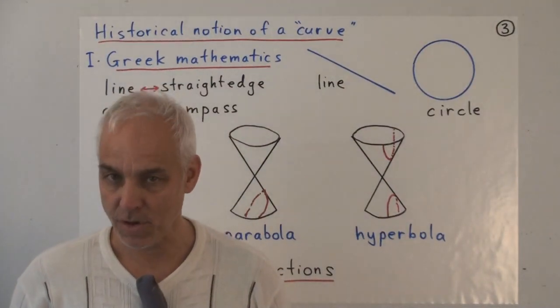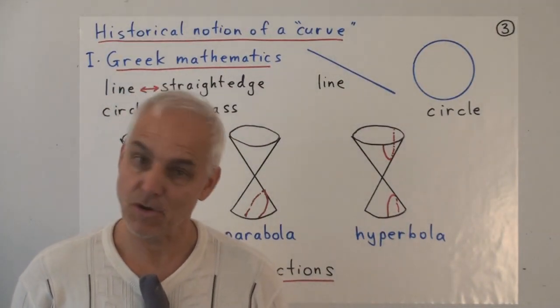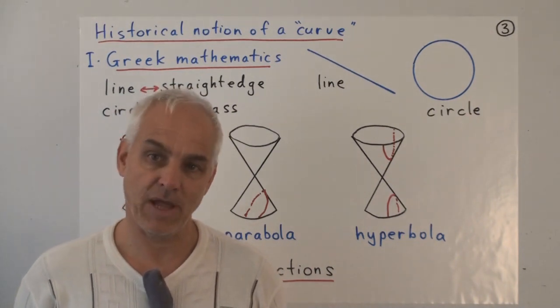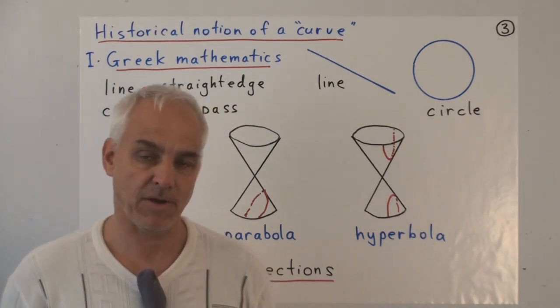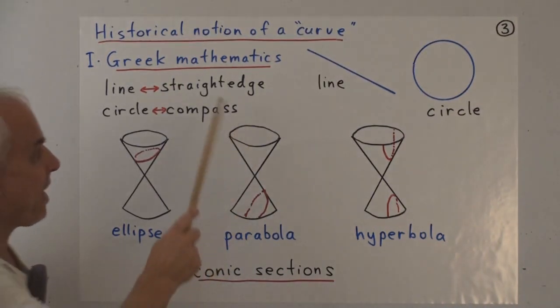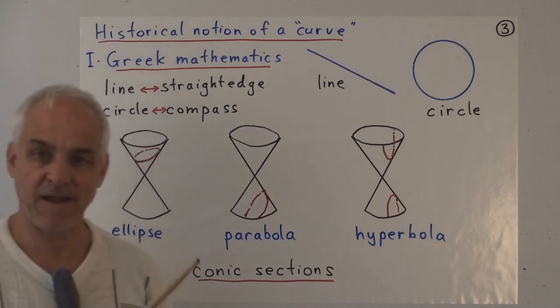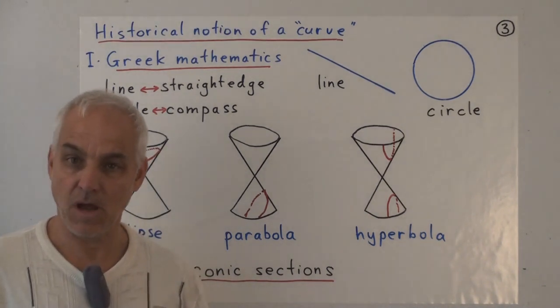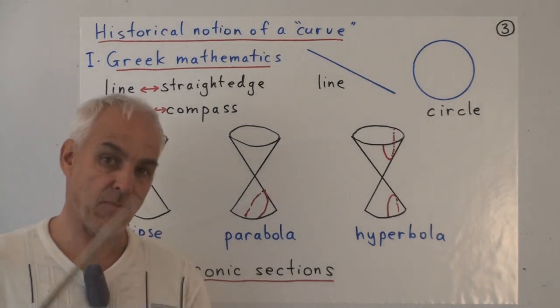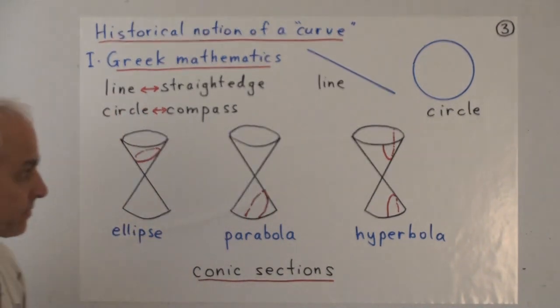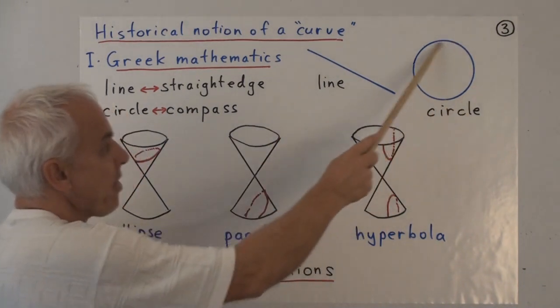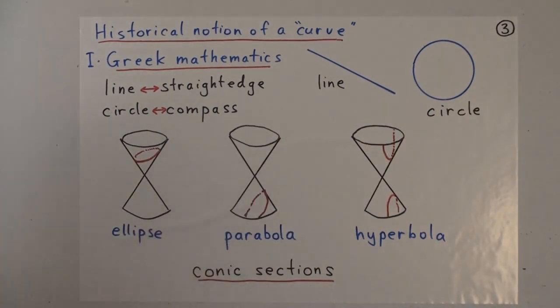Let's have a historical look at these questions by going back to the ancient Greeks. Greek mathematics emphasizes the importance of the straightedge and compass for making geometrical constructions, and correspondingly the notions of line and circle as being the fundamental curves or mathematical objects out of which most other things are built.